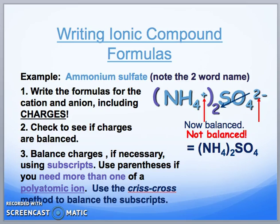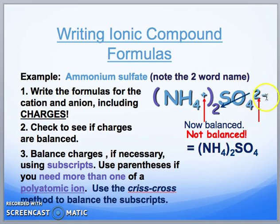Here is another example using ammonium sulfate. Ammonium has a positive 1 charge and sulfate has a negative 2 charge — they are not balanced. Using the crisscross method, the 2 goes on the ammonium side and the invisible 1 goes on the sulfate side. Since the 1 goes there, we don't need to put the sulfate in parentheses.